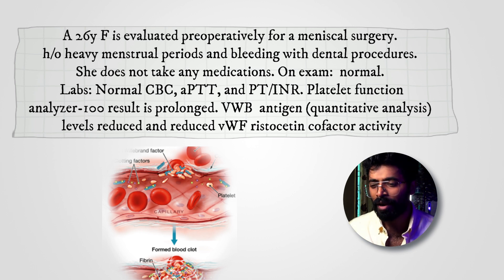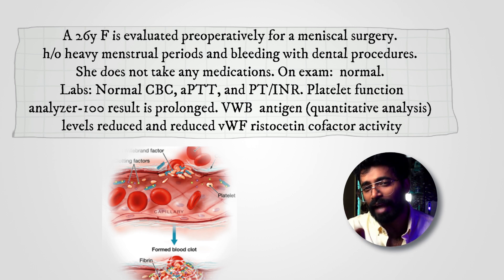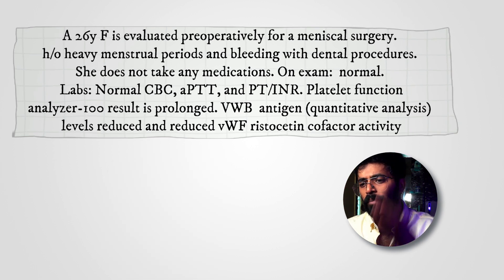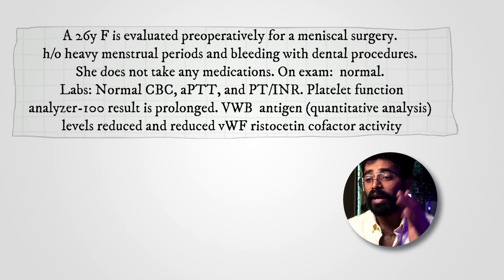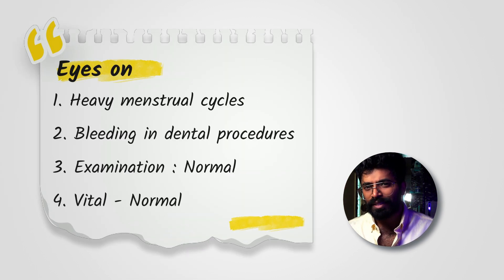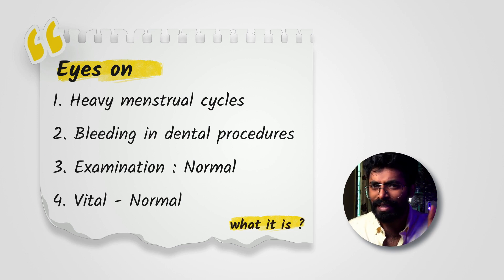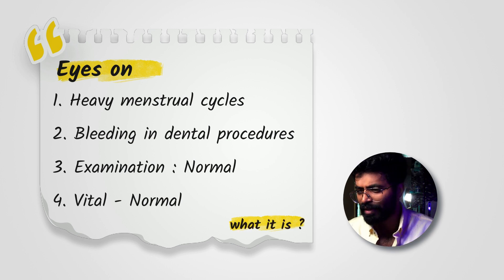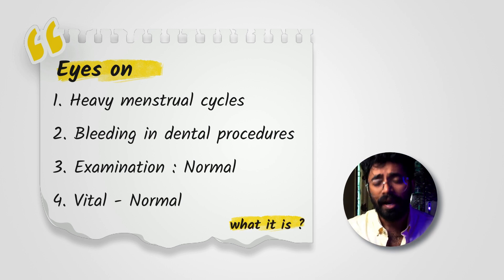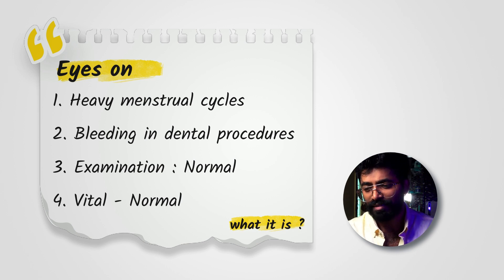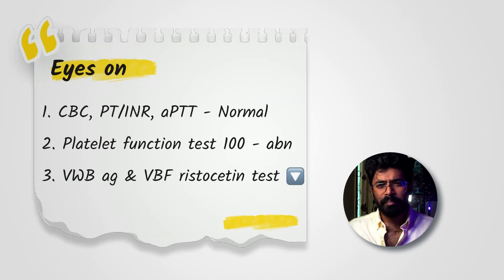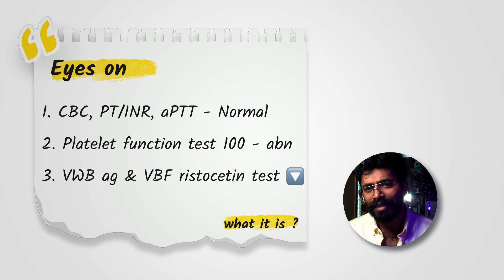Two to three new terms have appeared and we'll be discussing those. The key clinical points to focus on are: heavy menstrual cycles and bleeding during dental procedures, indicating a bleeding abnormality. Examination is normal, vitals are normal. Investigations like CBC, PT-INR, and APTT have been done. When we talk about PT-INR and APTT, those represent clotting factor defects.